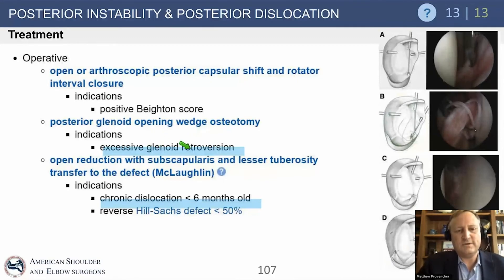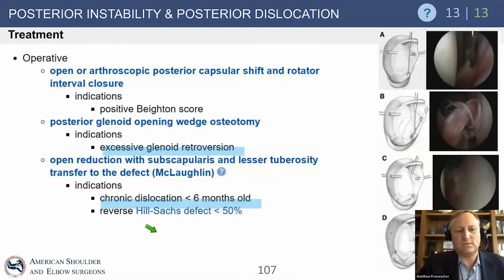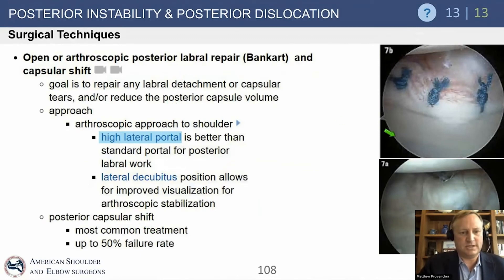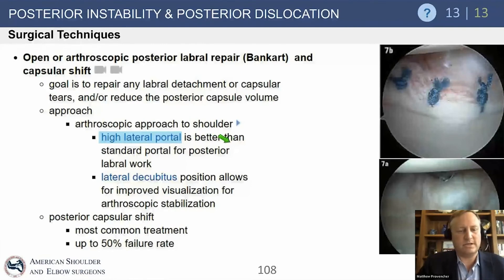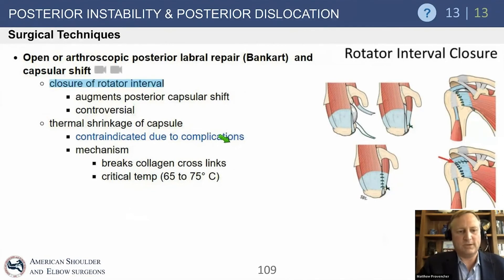Opening wedge osteotomy may be an answer if there is glenoid retroversion, although it remains highly controversial. Large reverse Hill-Sachs with chronic dislocations can be managed with a McLaughlin procedure — transferring the lesser tuberosity into the defect. Arthroscopic repair uses anchors and sutures; lateral decubitus positioning improves visualization, and the 7 o'clock posterolateral portal is an important access point. Rotator interval closure, the area between supraspinatus and subscapularis, augments the capsular shift but is controversial.